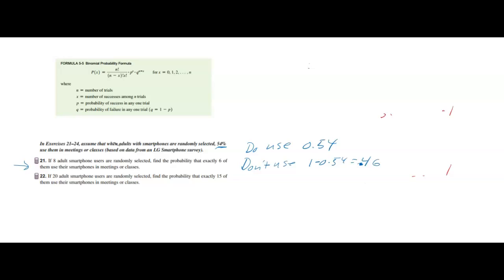Then if I look at problem 21, if eight adult smartphone users are randomly selected, find the probability that exactly six of them do use their smartphones. That number six goes with use their smartphones, so I have six people going with the probability that they do use.